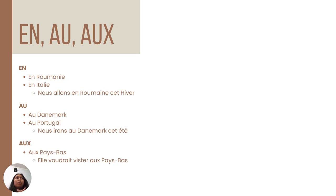For EN, we use it when we talk about a feminine country. For example, EN France — we say 'in France.' EN Roumanie — 'in Romania.' And EN Italie — 'in Italy.' For example, we use EN in Romania.